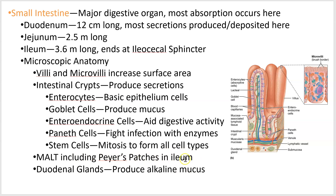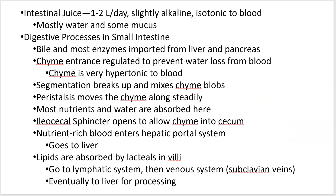There is mucosal-associated lymphoid tissue, including Peyer's patches, which are specific ones in the ileum but are scattered throughout. There are glands in the duodenum that produce an alkaline mucus. The intestinal juice that the intestines produce is slightly basic, isotonic — the same concentration of dissolved substances as your blood — and it's pretty watery and mucusy.